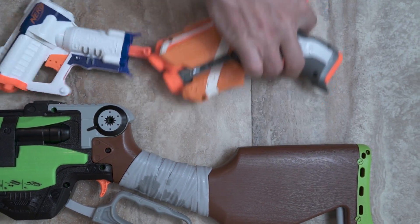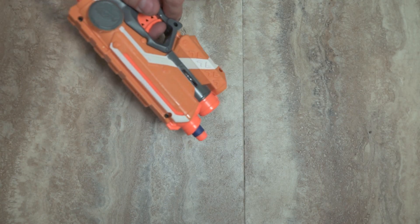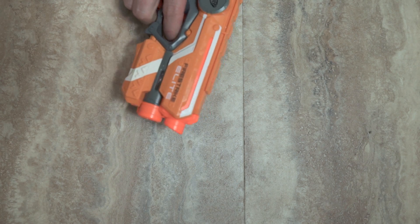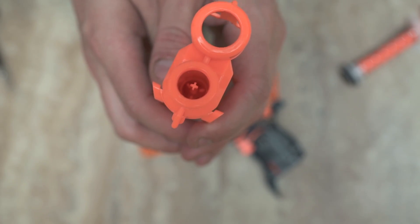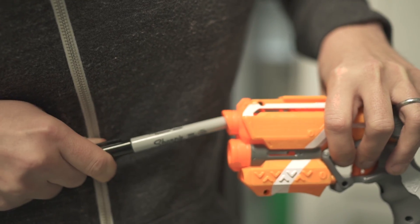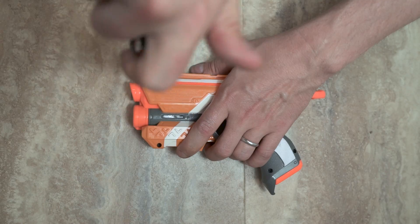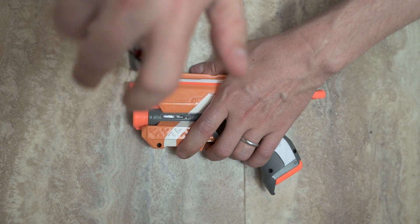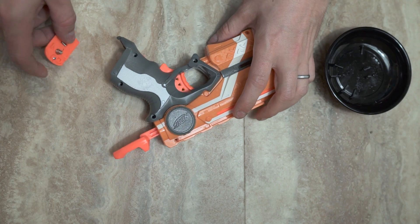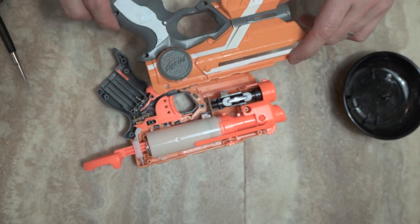Start off by grabbing an old Nerf gun that you want to modify. I used this N-Strike blaster because it was cheap and powerful. There's a safety mechanism built in that prevents these from firing unless a proper dart is loaded. Carefully remove all the screws holding your gun together and be sure to look for any that might be hidden. Now simply pry it apart with a screwdriver.